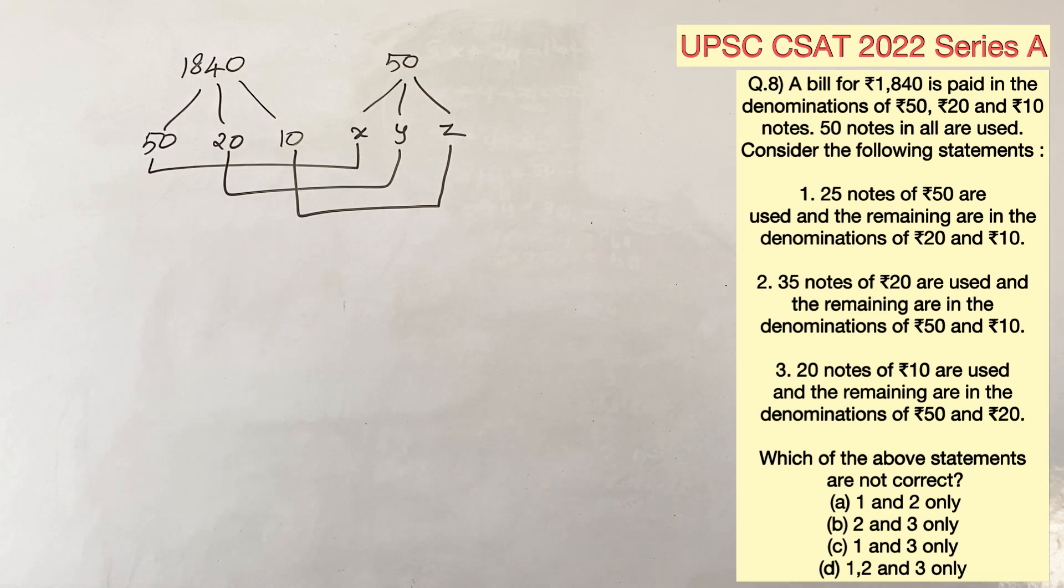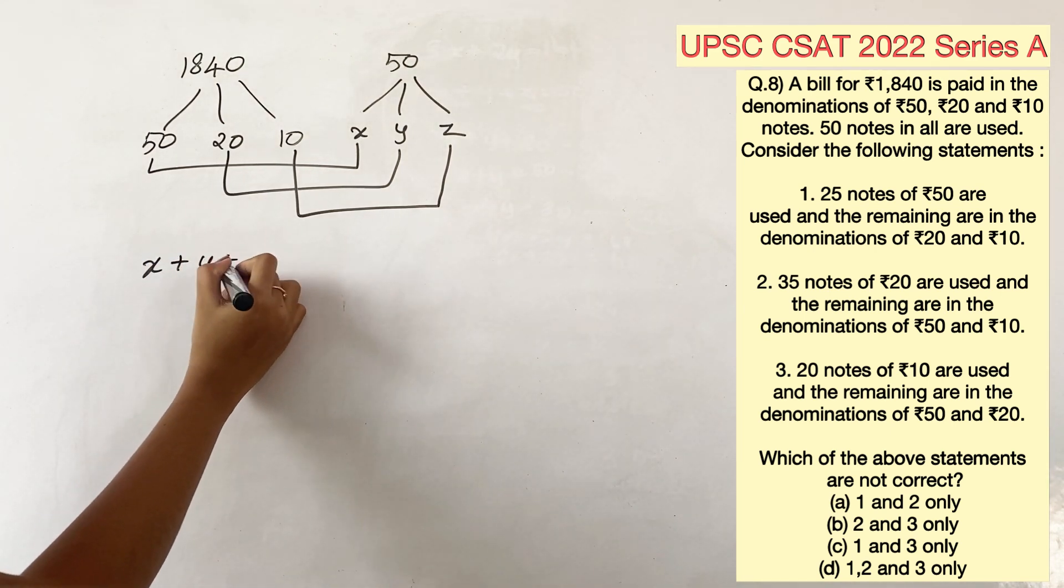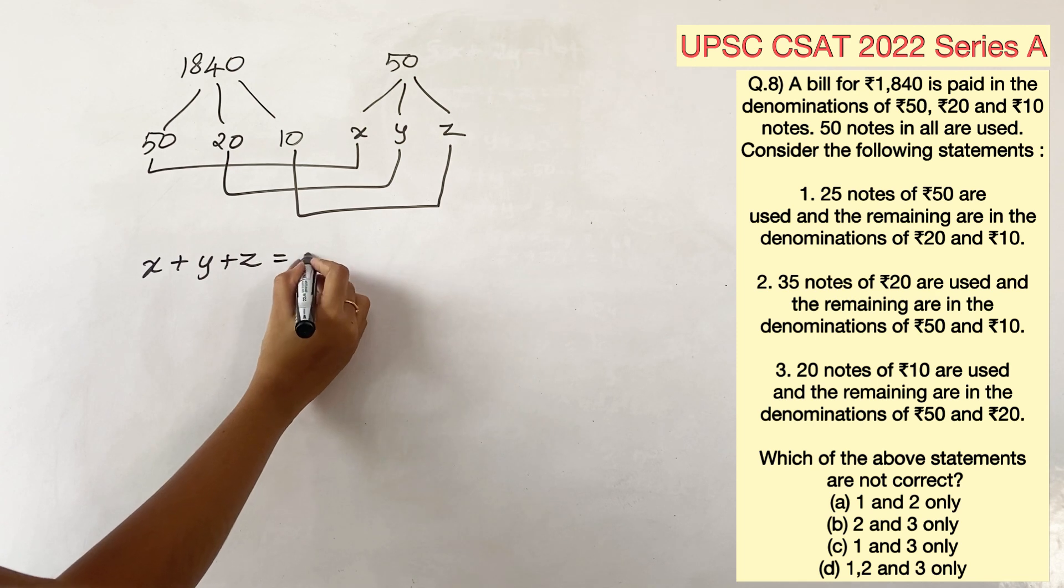Three statements are given. Our job is to find out which ones are wrong. Before jumping into the statements, let's form the equation. So, x plus y plus z is equal to 50.